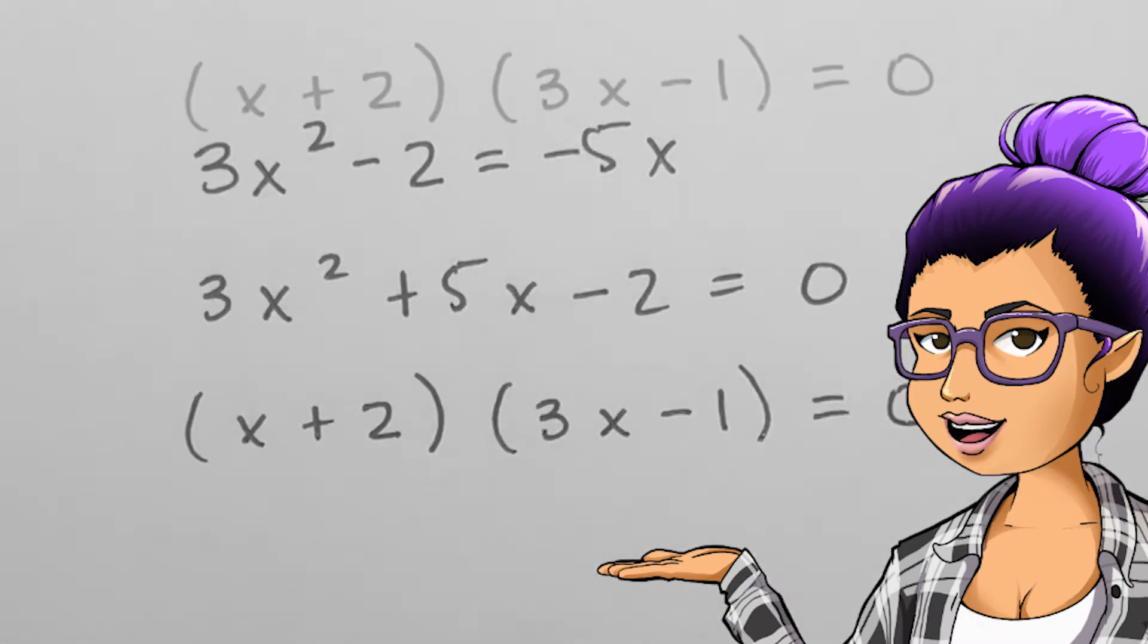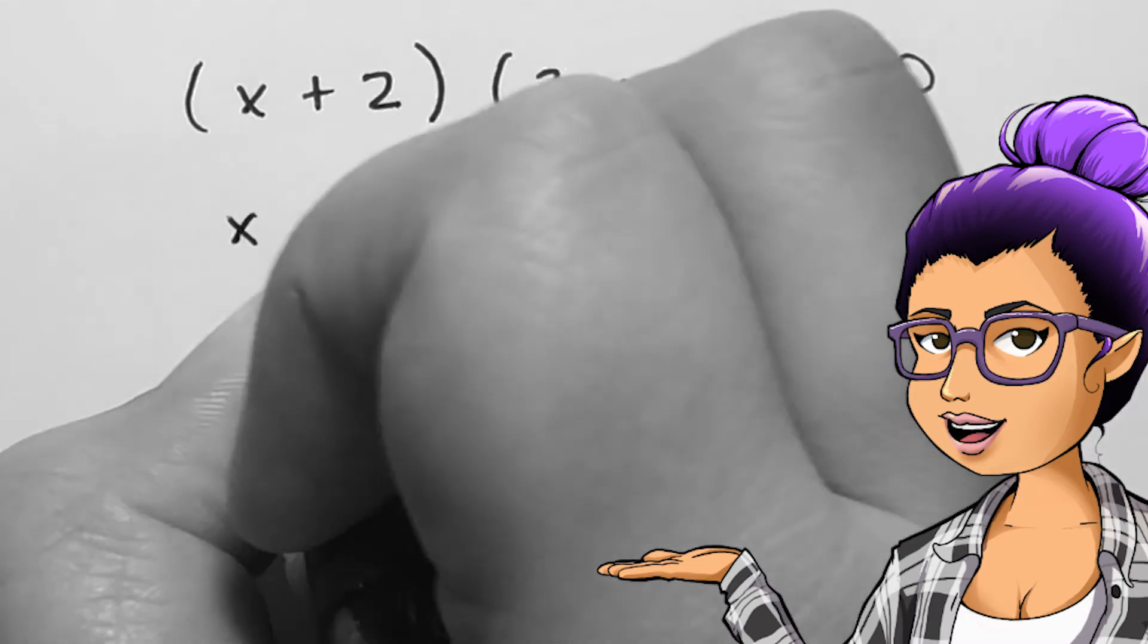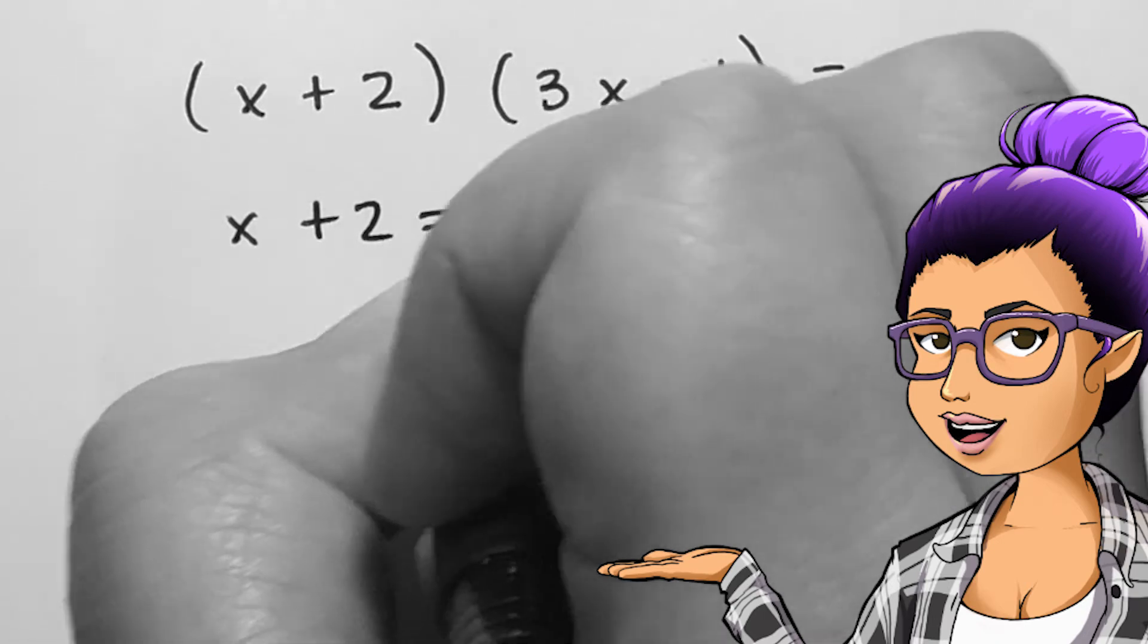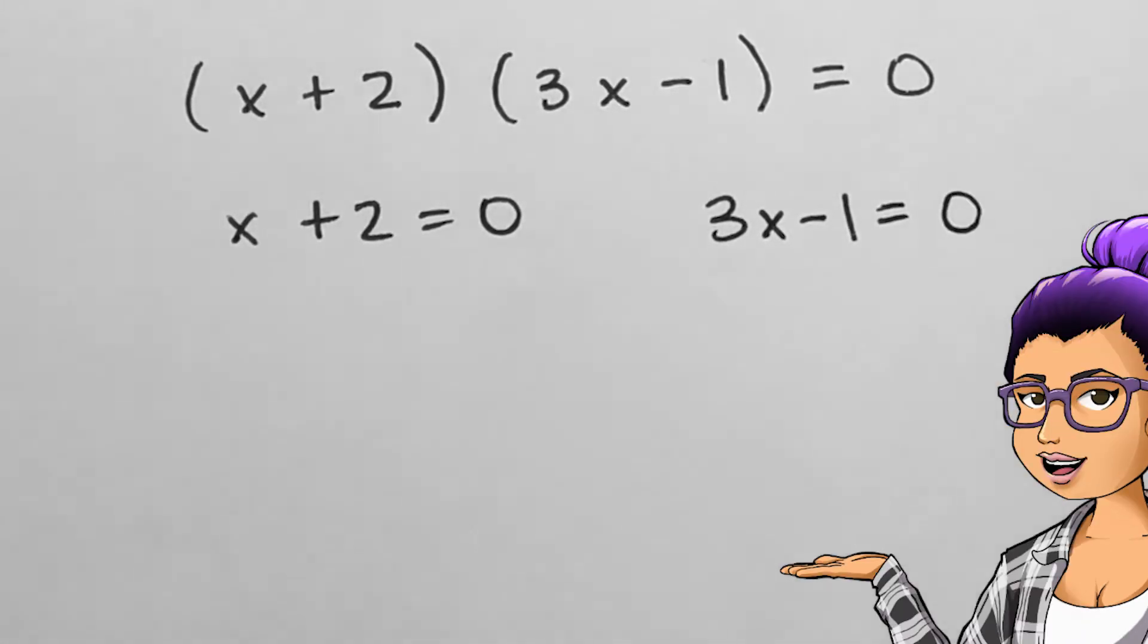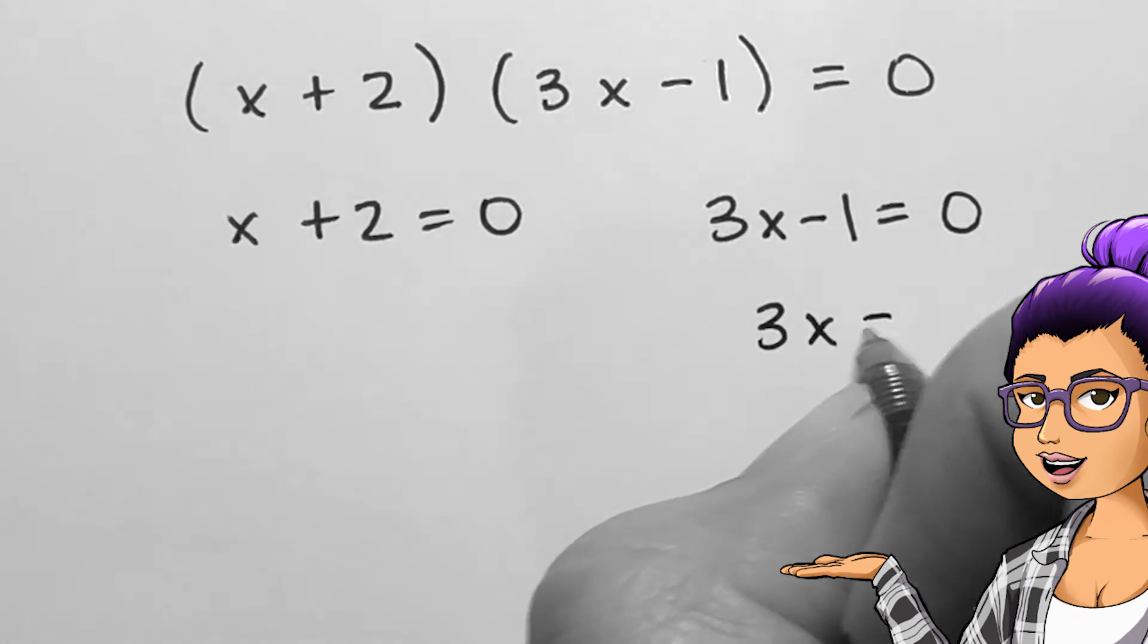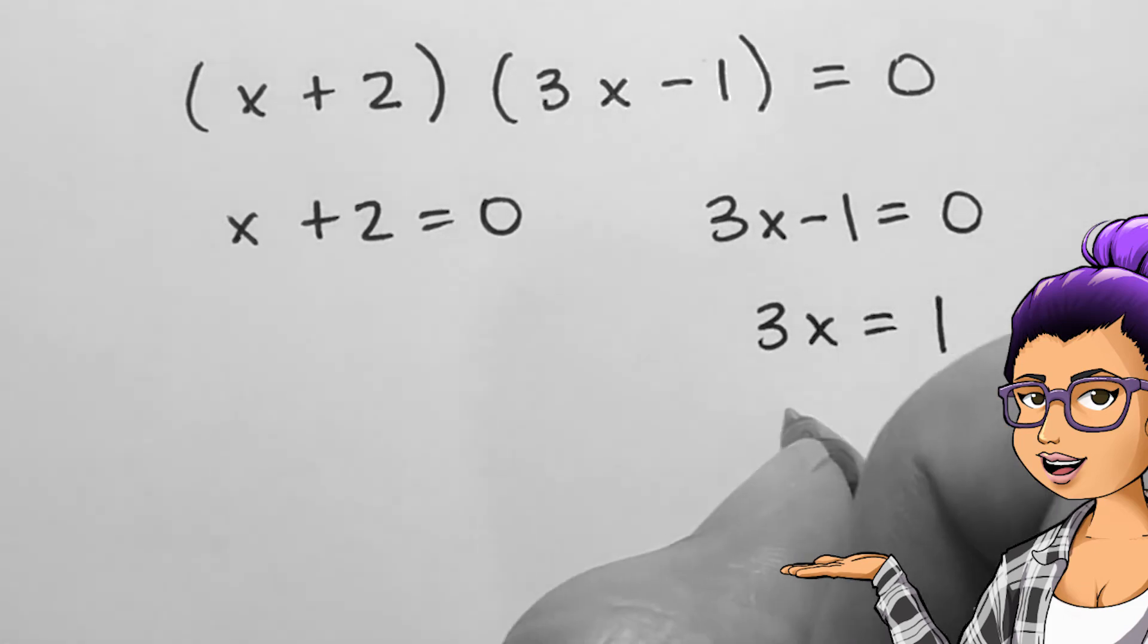The first equation is relatively quick to solve, like the previous examples, we get x equals negative 2. The other equation requires that we add 1 to both sides as well as divide by 3, leaving x equals 1 over 3.